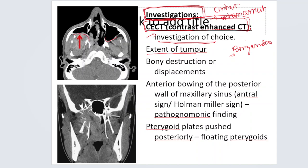On CT scan, you can see the tumor filling the sphenopalatine fossa and pushing the posterior wall of the maxillary antrum forward — this anterior bowing of the posterior wall of the maxillary sinus is the pathognomonic sign of JNA called the Holman-Miller sign (also known as the antral sign). No other disease shows this feature.